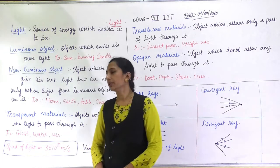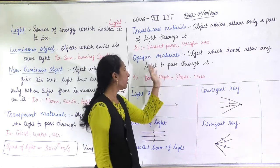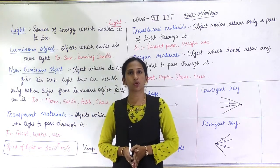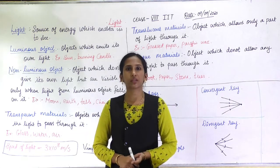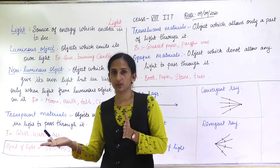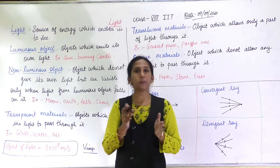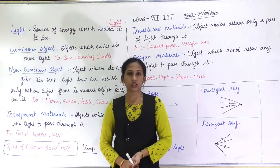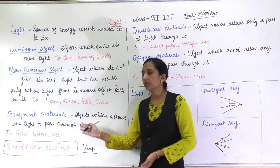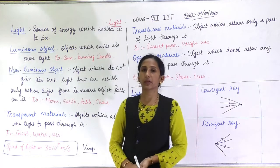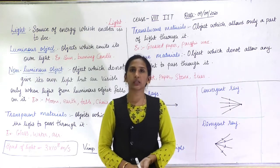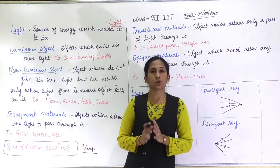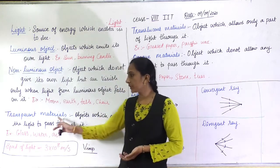Now we will look at three types of materials: transparent, translucent, and opaque. Transparent materials are objects that allow light to pass through them completely, so you can see the other side clearly. Examples are glass, water, and air. Air is also a transparent material — because air is here and you can see all objects clearly through it.